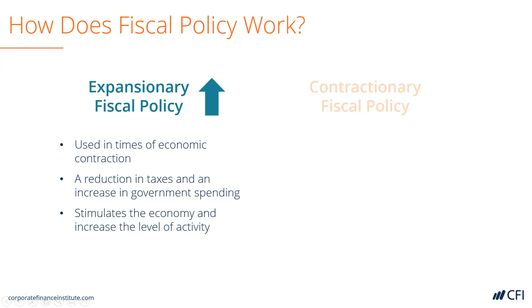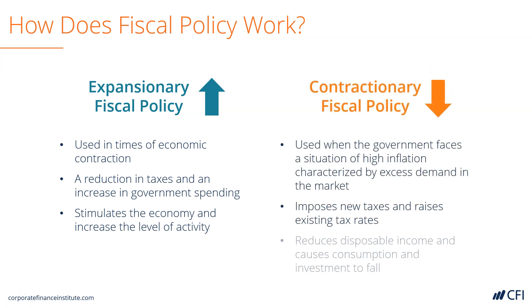Next, let's look at contractionary fiscal policy. This is used when the government faces too much economic expansion, which in turn causes high inflation. To slow the economy down, the government imposes or raises taxes. This reduces income levels and causes consumption and investment to fall.